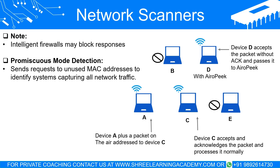This technique allows a network scanner to detect any system in promiscuous mode, which might otherwise remain undetected by other methodologies. For instance, if you suspect a device on your network is capturing all network traffic — a potential sign of a network sniffer or other security threat — you could use promiscuous mode detection to identify that device.